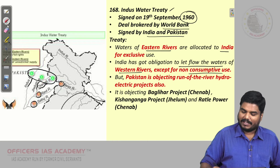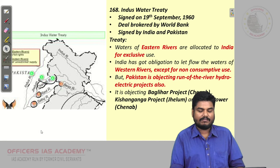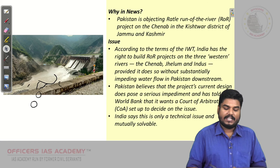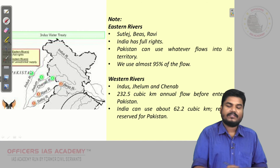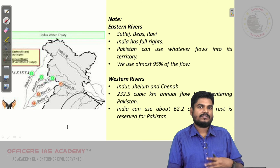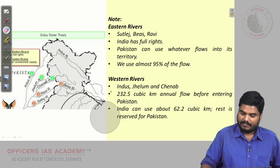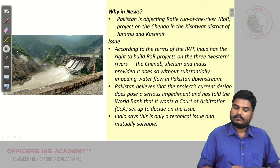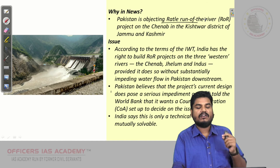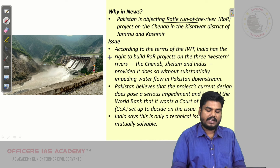Recently, this was in the news because Pakistan was raising issues over the Rattle Power Project. The Rattle Run-of-River Project is on the Chenab River. Pakistan is objecting to it and wants to take the case to international arbitration. The issue has been explained and the eastern and western river information is available for review.